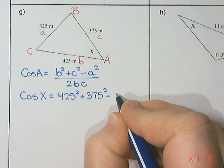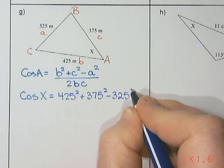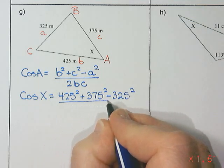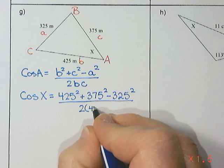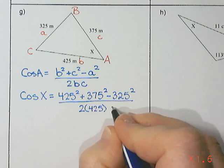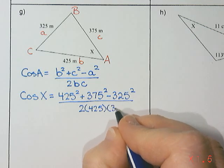minus A, 325 squared. And then that is all divided by 2, times B, 425, times C, 375.